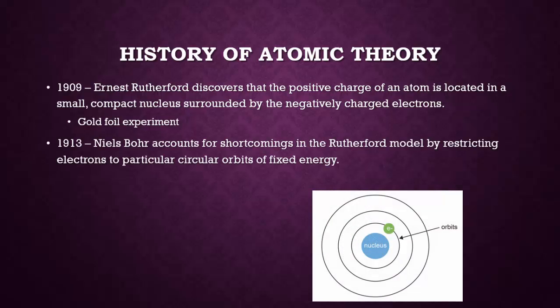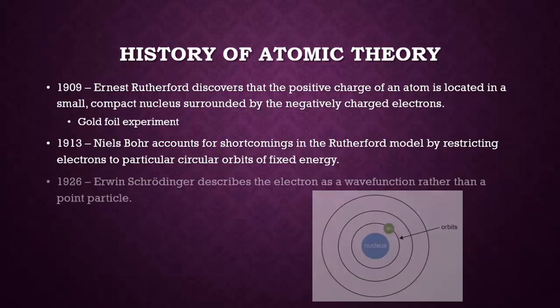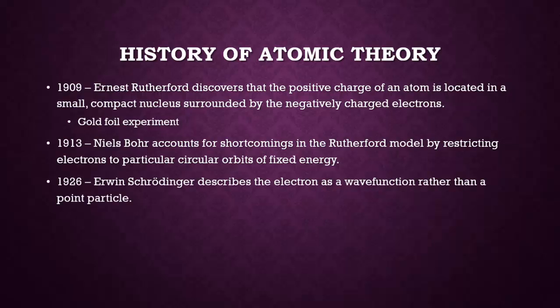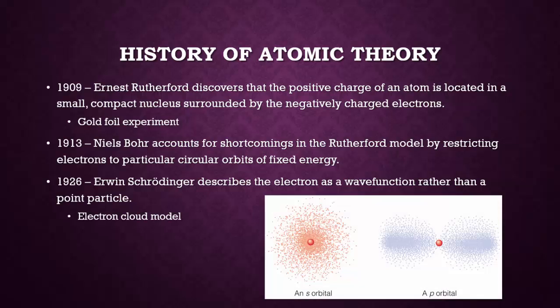In 1913, Niels Bohr accounts for shortcomings in the Rutherford model by restricting electrons to particular circular orbits of fixed energy. Finally, in 1926, Erwin Schrödinger describes the electron as a wave function rather than a point particle. This is often referred to as the electron-cloud model.